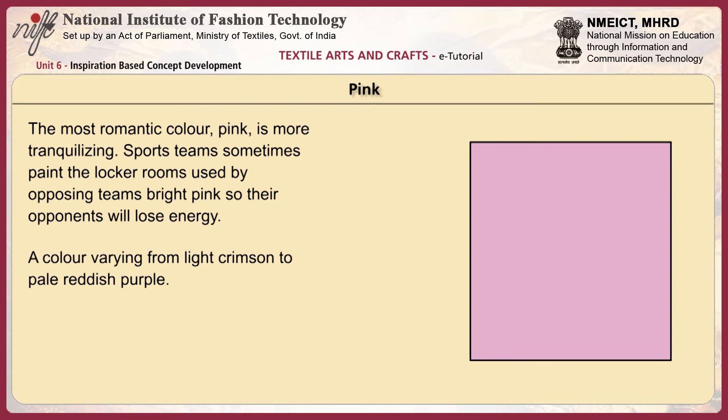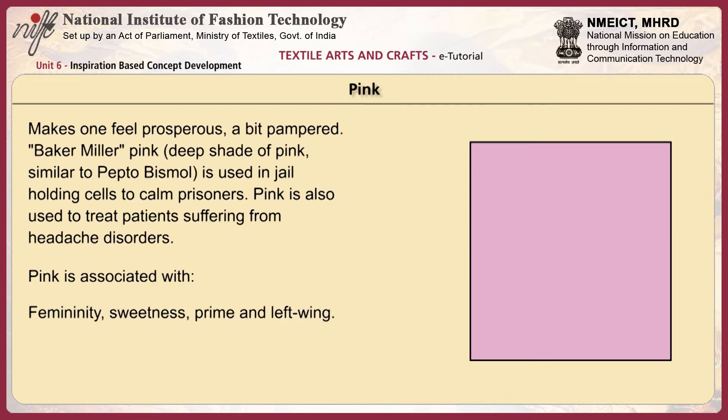The most romantic color, pink is more tranquilizing. Sports teams sometimes paint locker rooms used by opposing teams bright pink so their opponents will lose energy. Baker Miller pink — a deep shade similar to Pepto-Bismol — is used in jail holding cells to calm prisoners. Pink is also used to treat patients suffering from headache disorders.